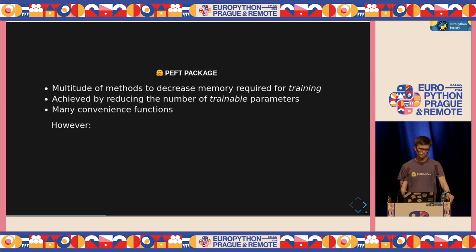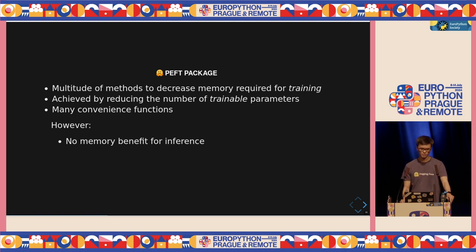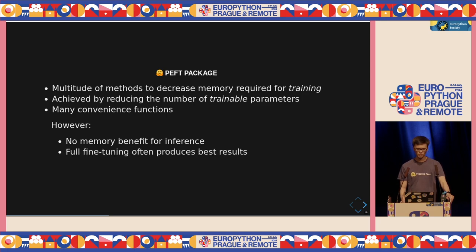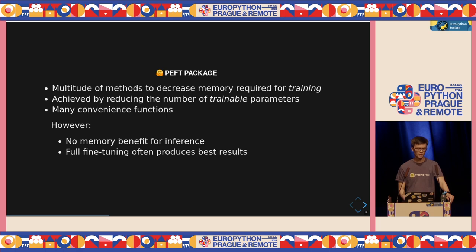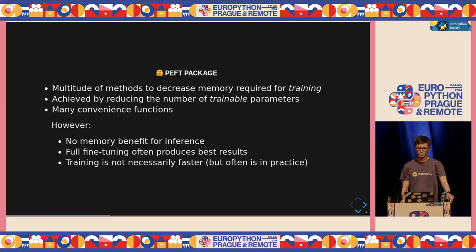There are also some misconceptions I want to clarify. For inference, there is no memory benefit — this is purely for training. If you cannot fit the model into memory for inference, PEFT will not help you. Furthermore, most papers show that full fine-tuning is still best when it comes to performance. If you want the very best performance, you might want to invest in bigger GPUs, but we can get fairly close. Finally, some people think PEFT makes training faster — that's not necessarily the case. The goal is always to reduce memory, not make it faster, though in practice it can often be faster.